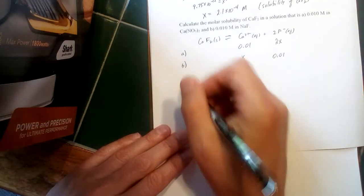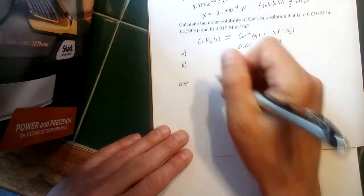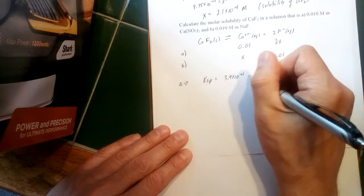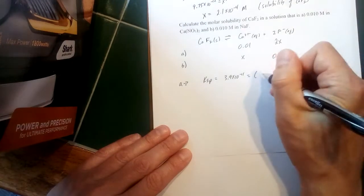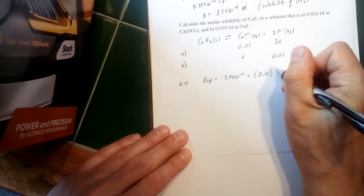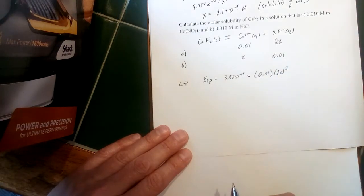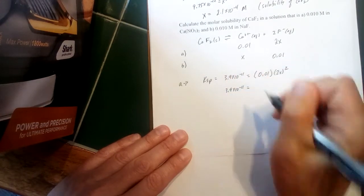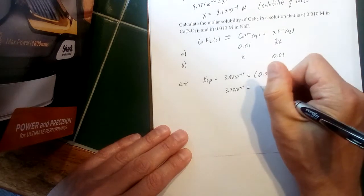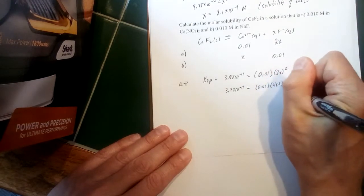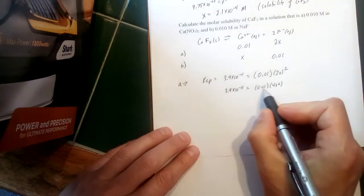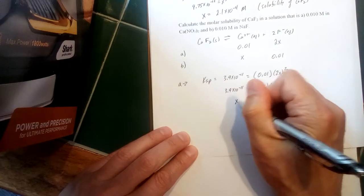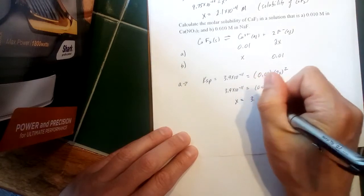Okay, coming back to Part A now that we know the variables to plug in there—Ksp here is still 3.9 times 10 to the minus 11, but when we go to plug in, our calcium concentration is 0.01 and our fluoride concentration is 2x, and again don't forget to square that. So solving that out, 3.9 times 10 to the minus 11th, and 2x squared would be 4x squared, so this would be 0.01 times 4x squared. Divide through by 0.01, divide through by 4, and then take the square root. So I think we can do all that in one step, would give us x is equal to 3.1 times 10 to the minus fifth molar.